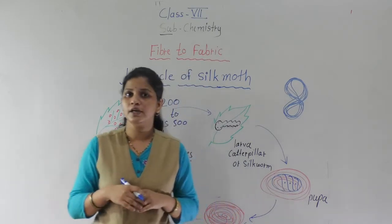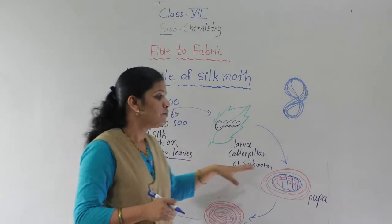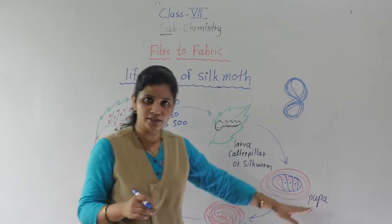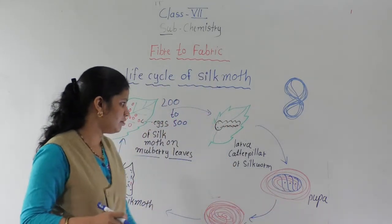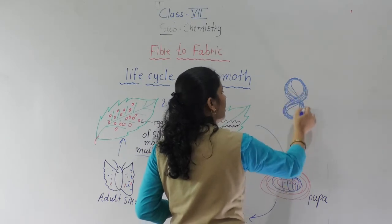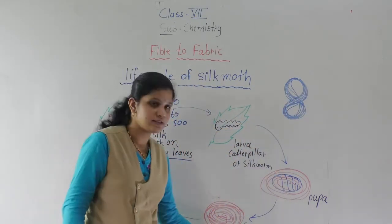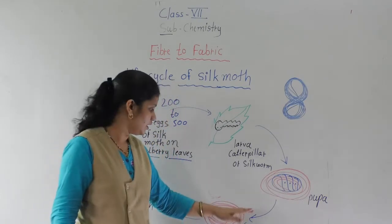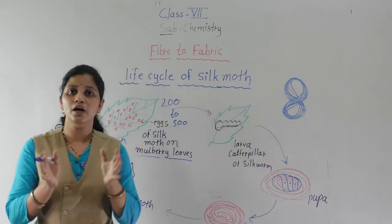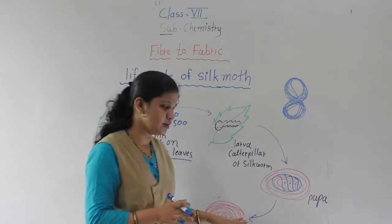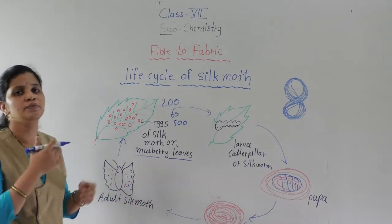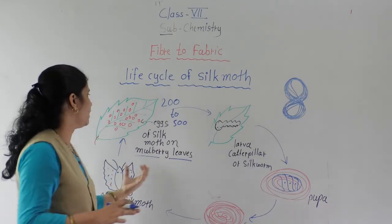You may have learned the life cycle of a butterfly in 3rd or 4th standard — this stage is similar. This stage is known as the pupa. After this process is completed, the covering formed is known as a cocoon, or 'kapur.' Inside this cocoon, the adult silk moth is present. After some time, the adult silk moth comes out, and again this cycle continuously happens — the female silk moth lays eggs again.